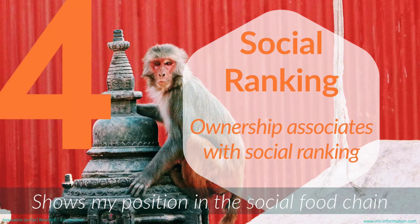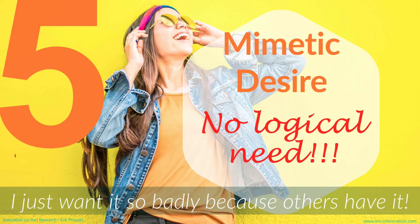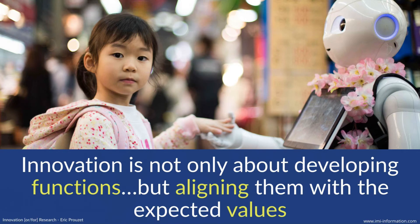Value number four is what I call social ranking. If I purchase something — maybe something I don't need, like a type of car or phone — it's because I link this product with social ranking. Being the owner of this product shows my position in the social food chain. Why do we buy very fast cars when we cannot drive beyond the speed limit? Usually it tells something about us to the rest of the community. Finally, the last value is what is called mimetic design — there's no logical need; I just want it so badly because others have it. I want the latest cell phone because everybody is rushing to buy it, so I just follow.